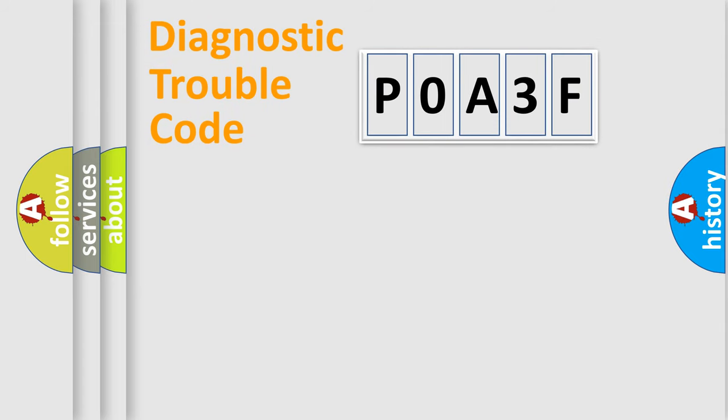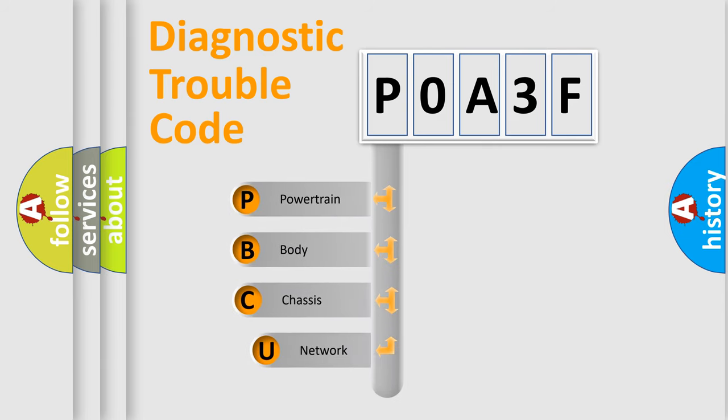First, let's look at the history of diagnostic fault code composition according to the OBD-II protocol, which is unified for all automakers since 2000. We divide the electric system of automobile into four basic units.